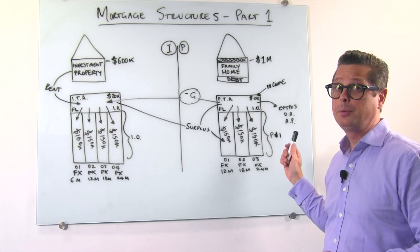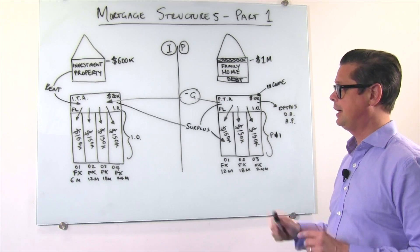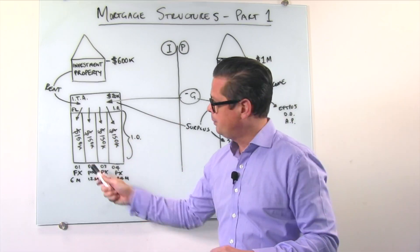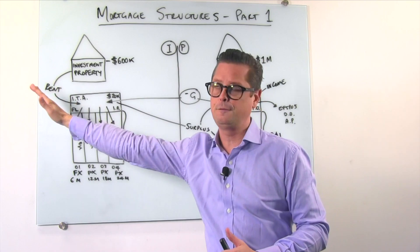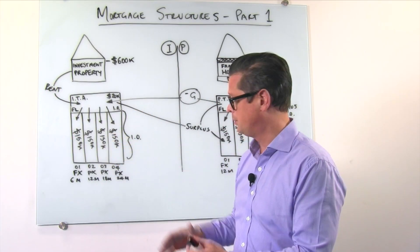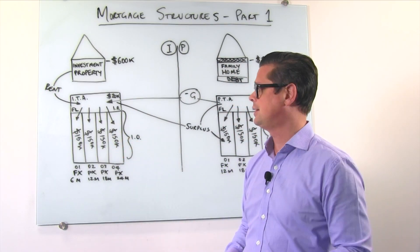And this debt is principal and interest debt and we'll come back to that. So on this side of the whiteboard we've got investment. So this is P for personal, I for investment. Now we've got their investment property. We've done basically exactly the same thing.